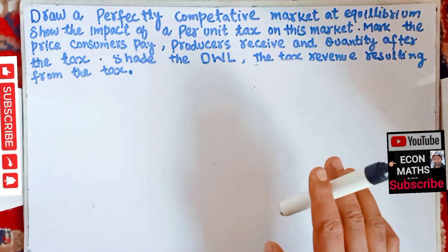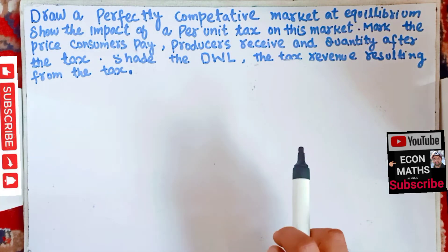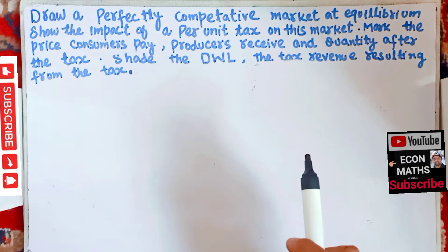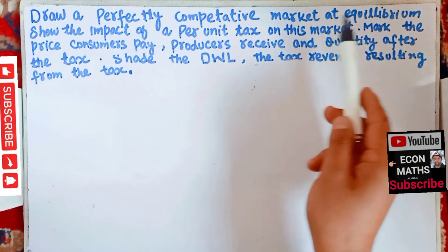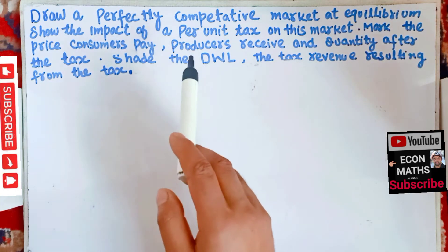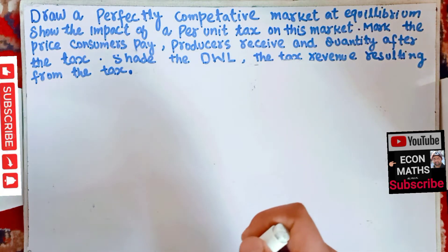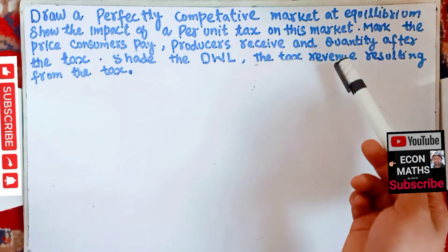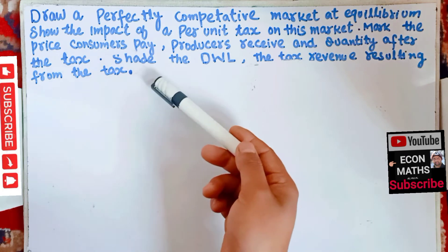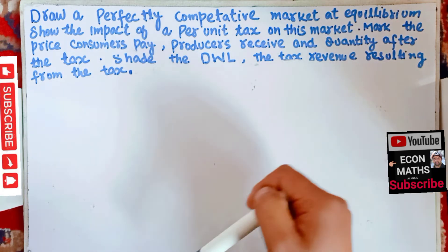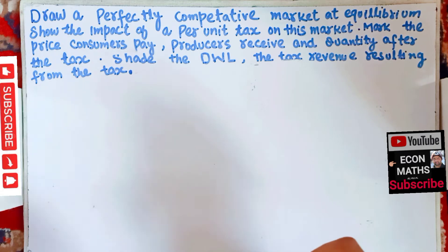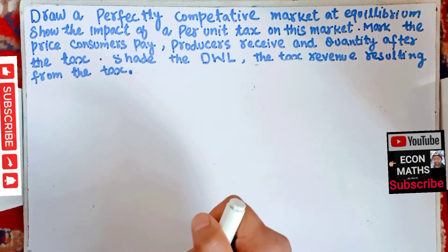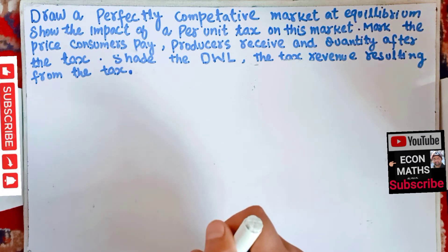Hi, this is Halal. In this video on graphing in economics series, we will solve a situational question. The question is: draw a perfectly competitive market equilibrium, show the impact of a per unit tax on this market, mark the price consumers pay, producers receive, and quantity after the tax, share the deadweight loss, and the tax revenue resulting from the tax. So we have to graph this situation.